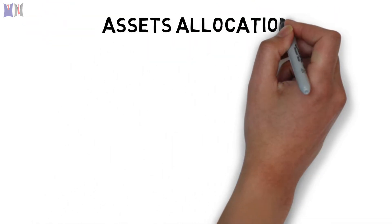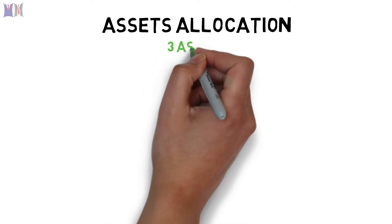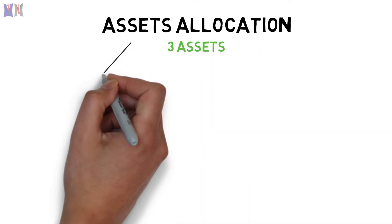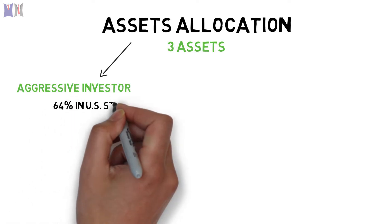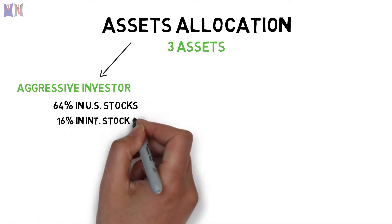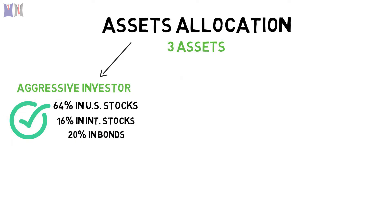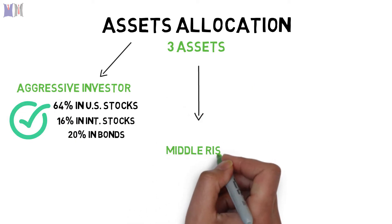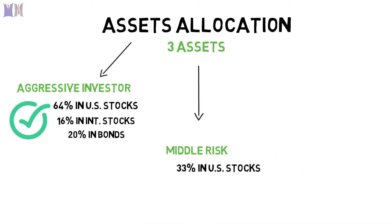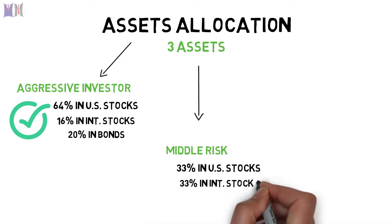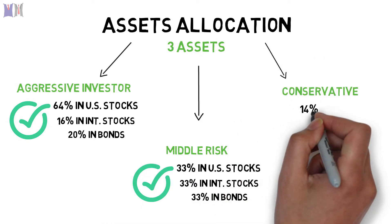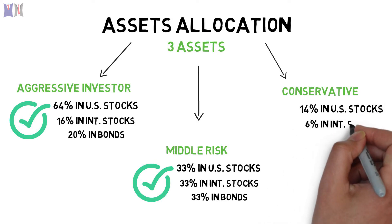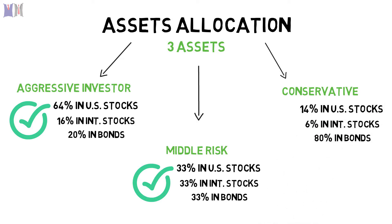Now let's find out what asset allocation fits you. This portfolio consists of 3 assets, but the actual allocation across each asset class can vary. If you are an aggressive investor, you can do 64% in US stocks, 16% in international stocks, and 20% in bonds. If you are in the middle of risk tolerance, you can do 33% in US stocks, 33% in international stocks, and 33% in bonds. And if you want to do it conservatively, you can do 14% in US stocks, 6% in international stocks, and 80% in bonds.